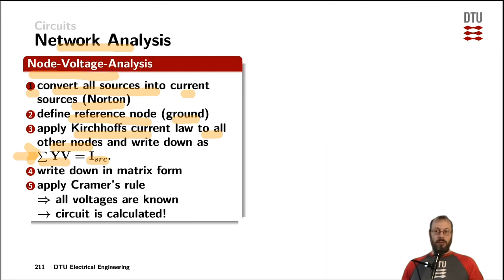Mathematically, you can write that down in a matrix form, which I will show you on the next slide. And then you can apply Cramer's rule, which is another mathematical tool to solve for the unknowns, which in that case is the voltage vector. Afterwards, all the voltages are known and the circuit is calculated.